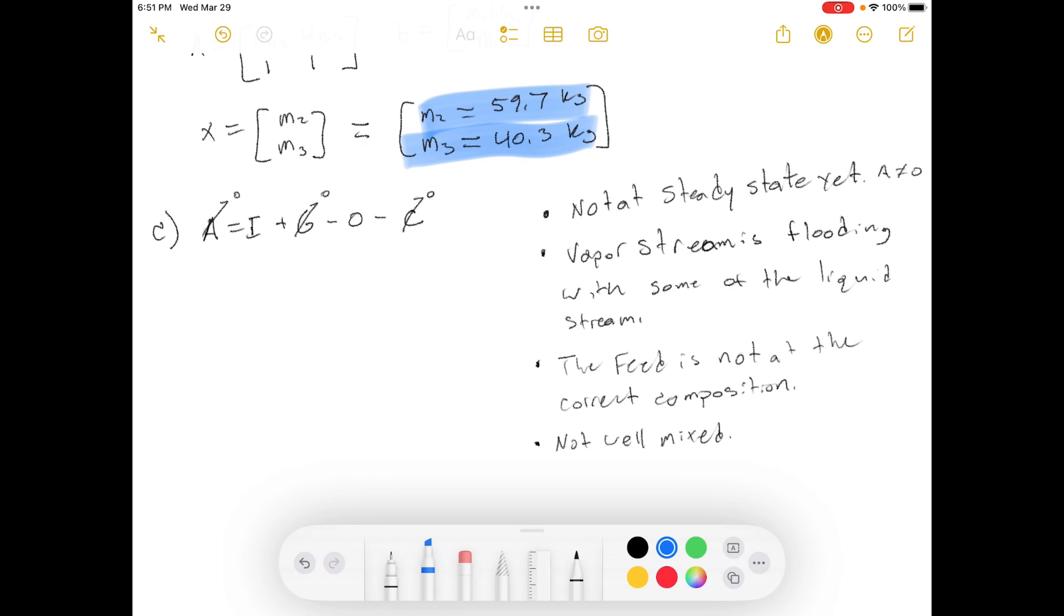So, in Part A, we assumed that there was no accumulation, no generation, and no consumption. We also assumed that the process was at steady state, that the process was closed, that it was well mixed. So, all of these things go into it. So, we could just say the process is not yet at steady state. You just started it up. So, there could be some accumulation inside of the tank. Maybe the tank level is changing, or the pressure, temperature, you know, any number of those things.